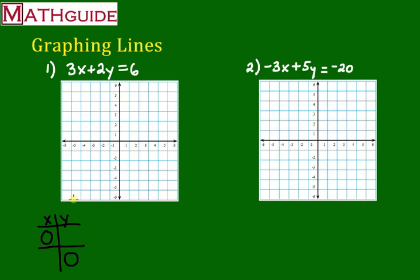So what you do is imagine plugging in 0 here for x. If we were to plug in 0 for x, we would get 3 times 0, and 3 times 0 is 0. And that whole term would basically just go away. 0 plus 2y is just 2y.